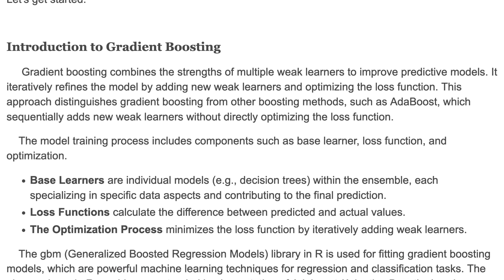Gradient boosting combines the strengths of multiple weak learners to improve predictive models. It iteratively refines the model by adding new weak learners and optimizing the loss function. This approach distinguishes gradient boosting from other boosting methods such as AdaBoost, which sequentially adds new weak learners without directly optimizing the loss function. The model training process includes components such as the base learner, loss function, and optimization.